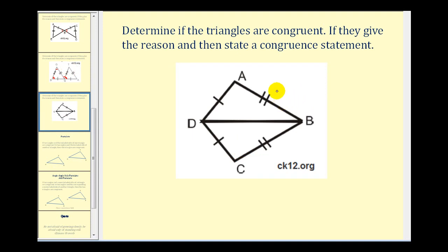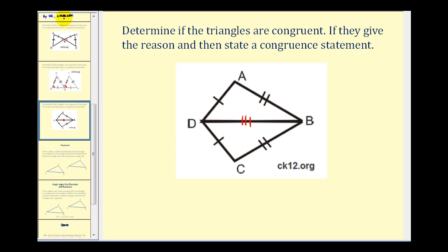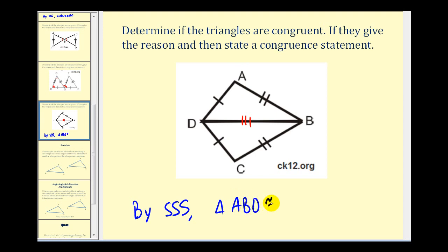Let's look at one more example. Notice we're given two pairs of congruent sides, and both triangles share side BD, which is congruent to itself. So by side-side-side, these two triangles are congruent. We'll say triangle ABD is congruent to triangle CBD, where A corresponds to C, B corresponds to itself, and D corresponds to itself.